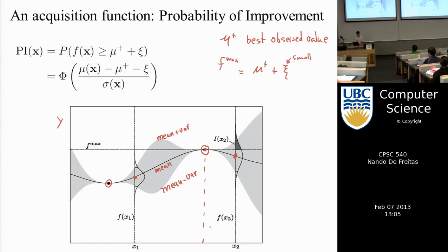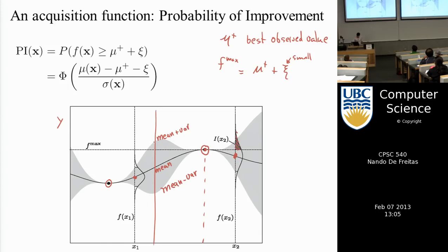The criterion I'll use for exploration-exploitation is the area under the Gaussian curve above F_max — the tail probability. If I have a broad Gaussian at some x, the area under the tail above mu-plus is what I use as the acquisition function value. As you can see, x2 has a much higher tail area than x1, because x1's tail area is almost zero.